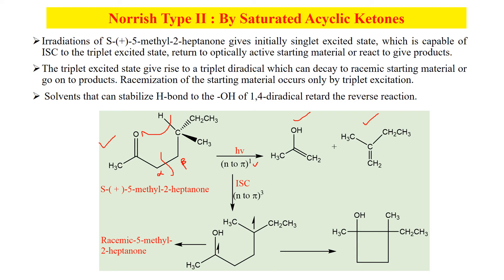It can also undergo intersystem crossing, so the singlet is converted into the triplet form — triplet means biradicals. Here are the two possibilities: one is that bond rotation can lead to the racemic mixture of the starting material, that is 5-methyl-2-heptanone. The other possibility is that bond rotation leads to cyclization, forming cyclobutane.